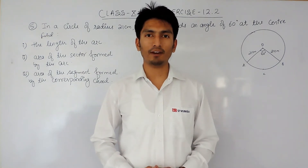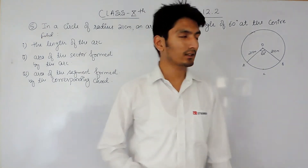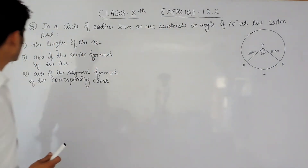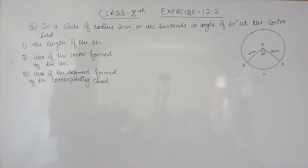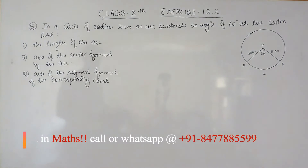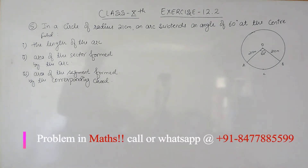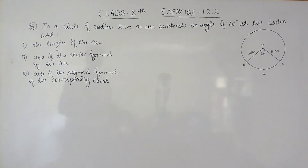Hello everyone, we are from True Math and in this video we are going to solve question number five of exercise 12.2. The question says: in a circle of radius 21 centimeters, an arc subtends an angle of 60 degrees at the center. You have to find the length of the arc, the area of the sector formed by the arc, and the area of the segment formed by the corresponding chord.